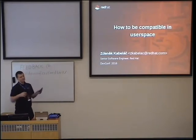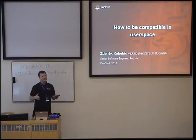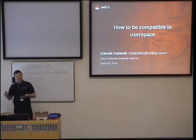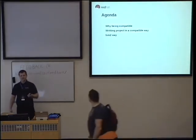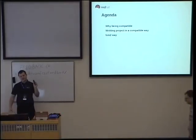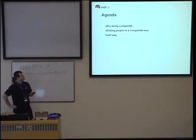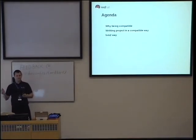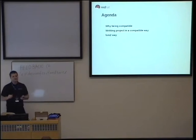So, what is my talk going to be about? I think everyone knows that the Linux kernel is compatible forever — the API from kernel space is kept forever compatible and you can rely on it. The problem is that in user space, it doesn't apply at all. I will first mention what I mean by compatibility and why we should be compatible. Then I will talk about what it means to write a project in a compatible way, and I will mix it in with our LVM solutions. I will even show you code from LVM to demonstrate how we do things.